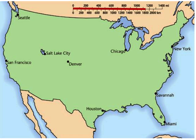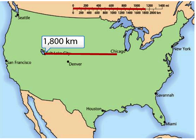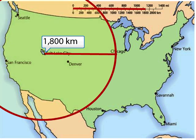Now I'm going to take that line and bring it down here to where Salt Lake City is. That's 1,800 kilometers — I've labeled it. Now if I were to draw a circle around Salt Lake City that's exactly 1,800 kilometers in radius, then anywhere on that circle we could have had the earthquake. We don't know where, but anywhere on that circle we could have had it.